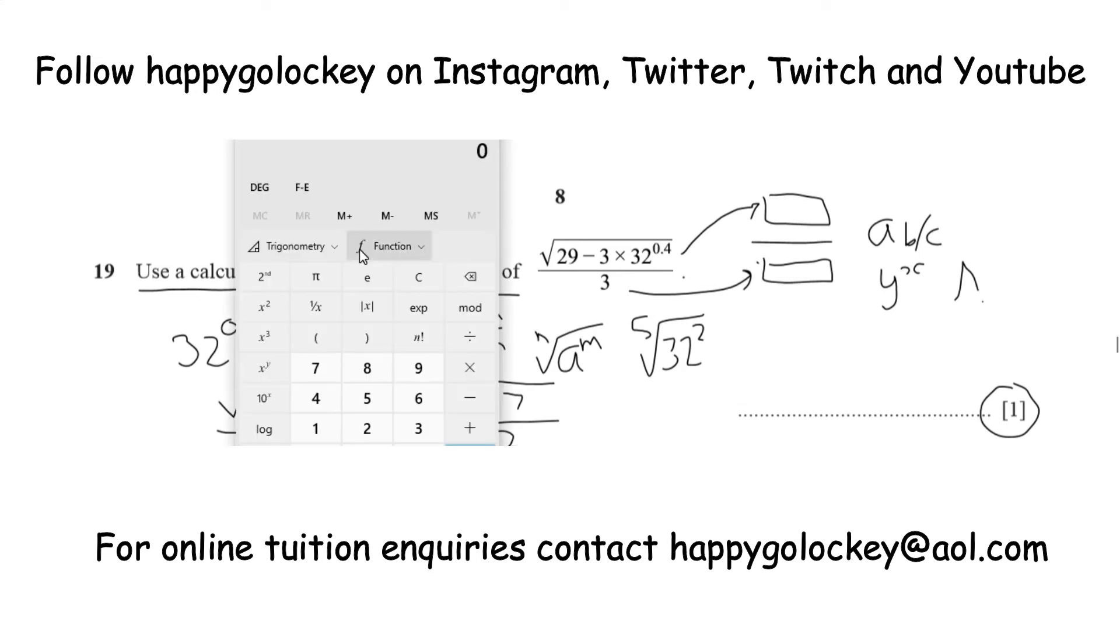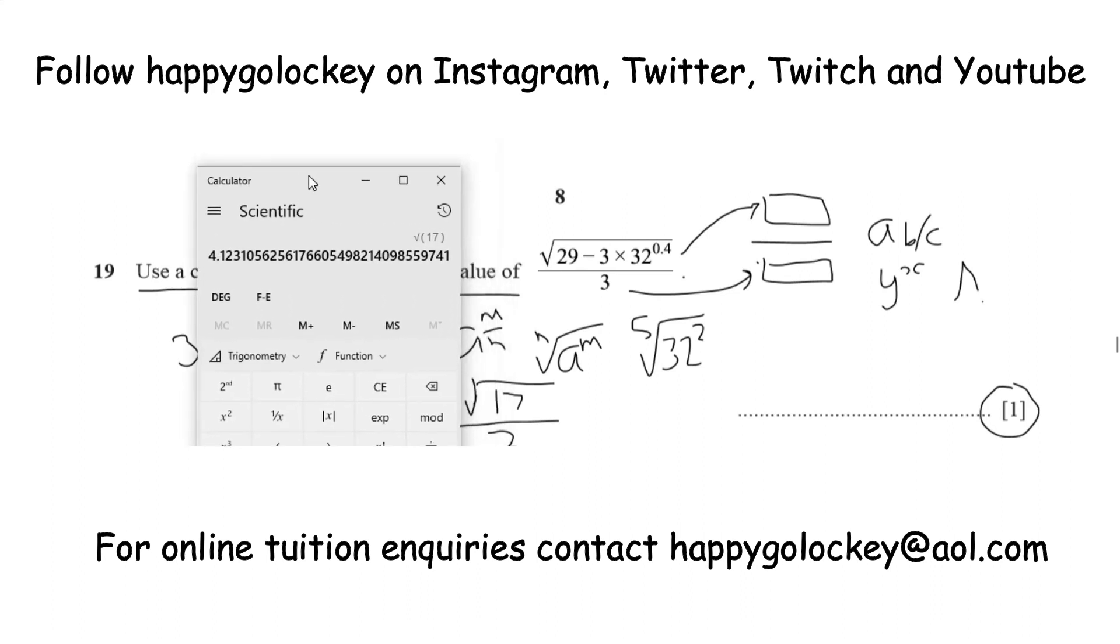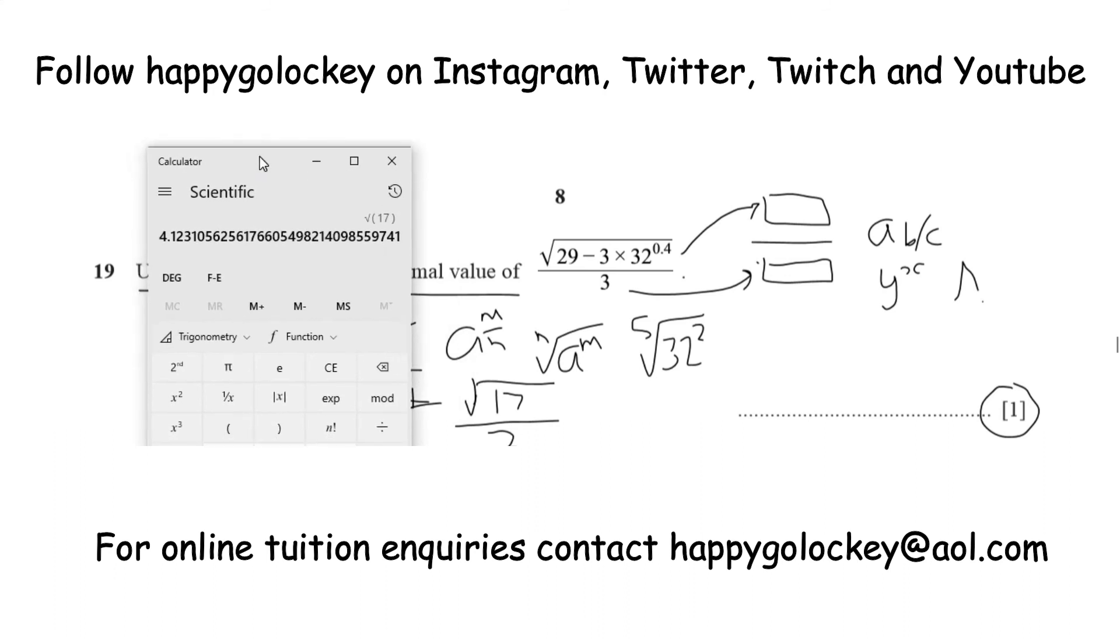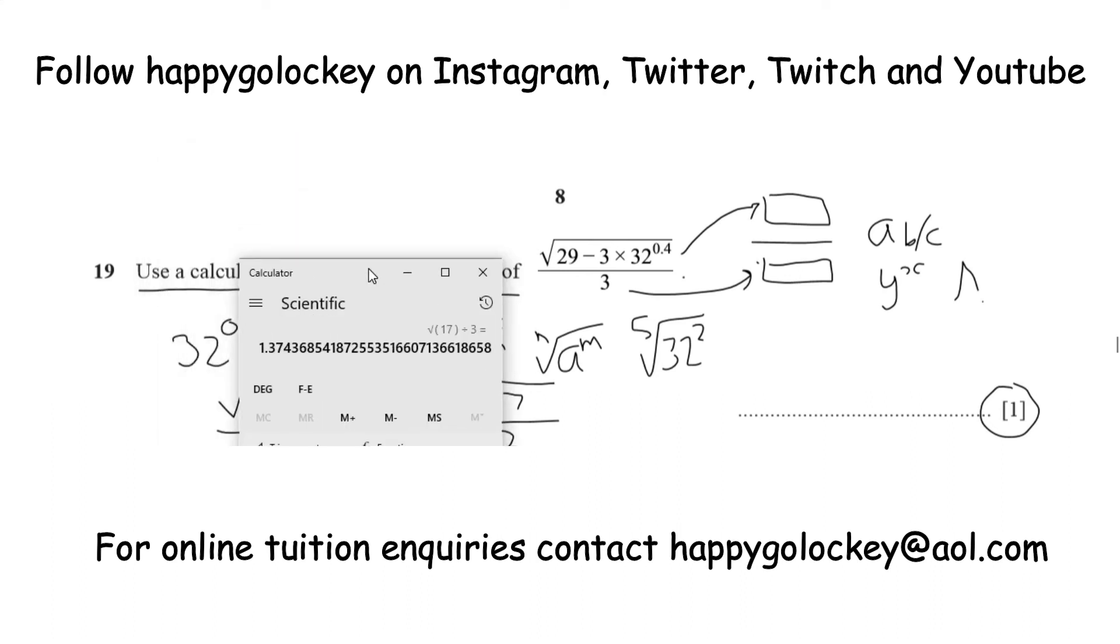Okay, so we've got our calculator, and we need to do the square root of 17. That's the square root of 17, if you can see that. 4.123 dot dot dot. That's the square root of 17, and we just need to divide that by 3. Press equals, and your answer is there. 1.374 dot dot dot.